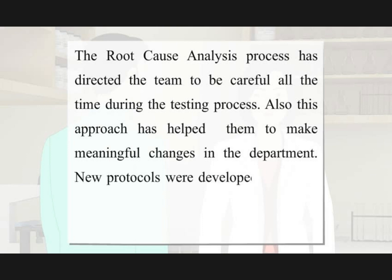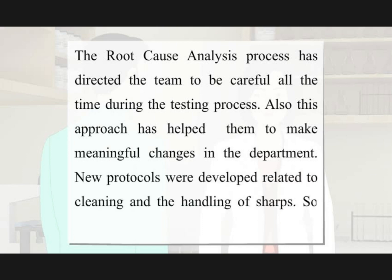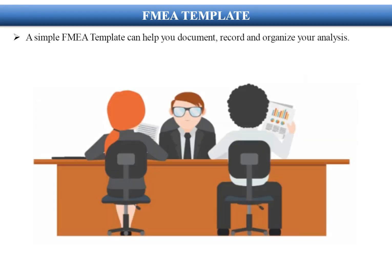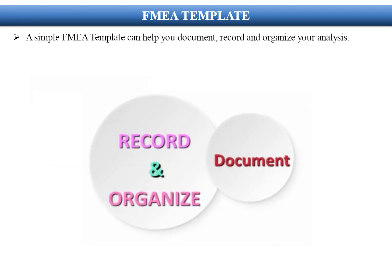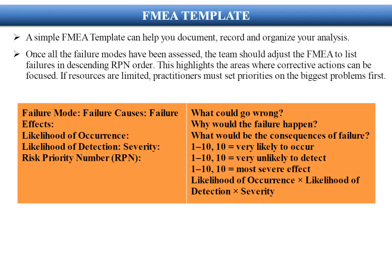New protocols were developed related to cleaning and the handling of shafts so that such errors could be reduced. Regarding the FMEA Template: a simple FMEA template can help you document, record, and organize your analysis. Once all the failure modes have been assessed, the team should adjust the FMEA to list failures in descending RPN order. This highlights areas where corrective actions can be focused. If resources are limited, practitioners must set priorities on the biggest problems first.